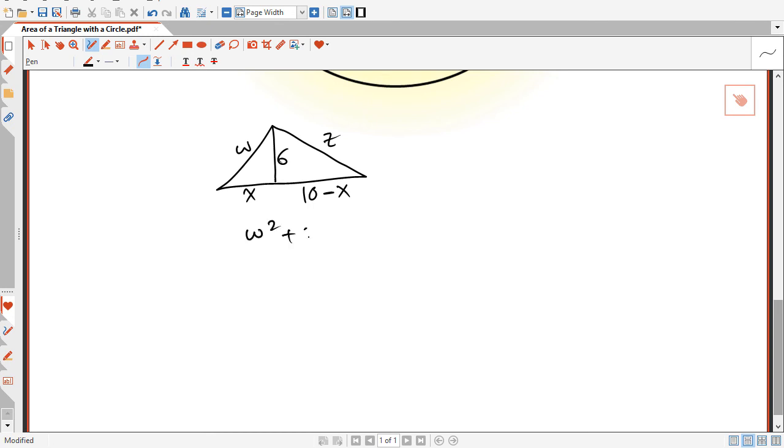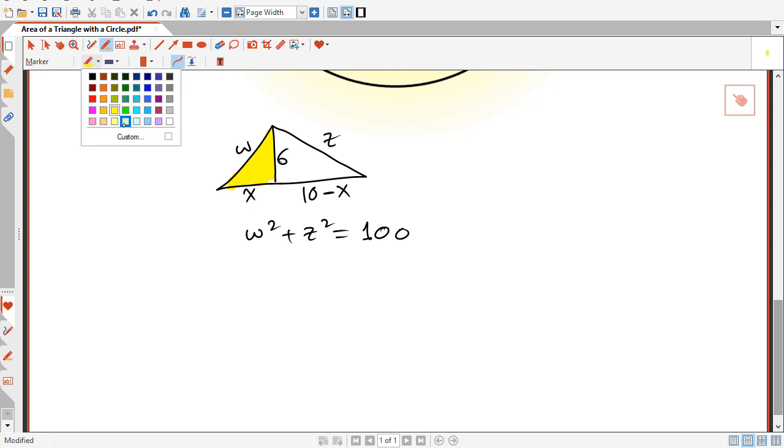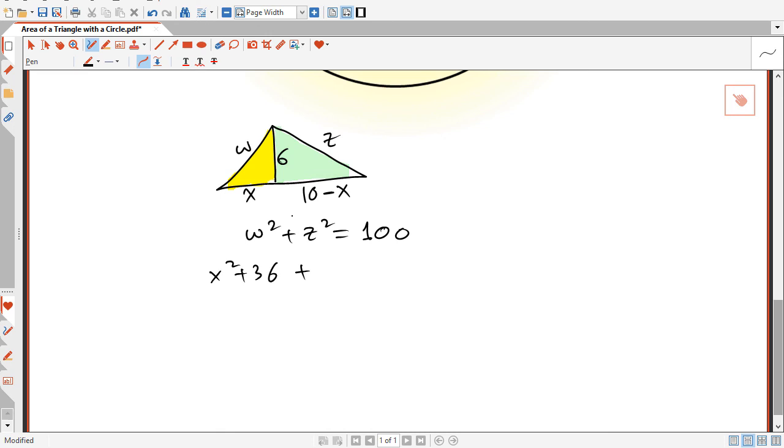I will highlight this triangle here, the small triangle in yellow, and I will highlight the other triangle here in green. Applying the Pythagorean theorem to the yellow triangle gives us that W squared equals X squared plus 36. Applying the Pythagorean theorem to the green triangle gives us that Z squared is equal to 36 plus (10 minus X) squared.